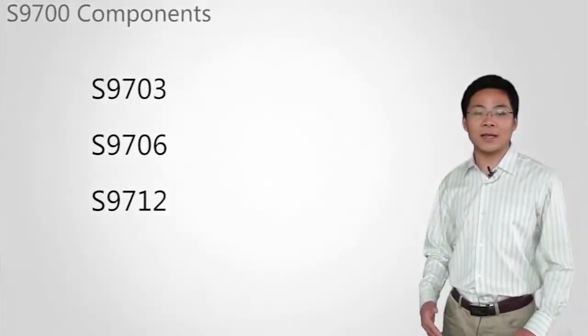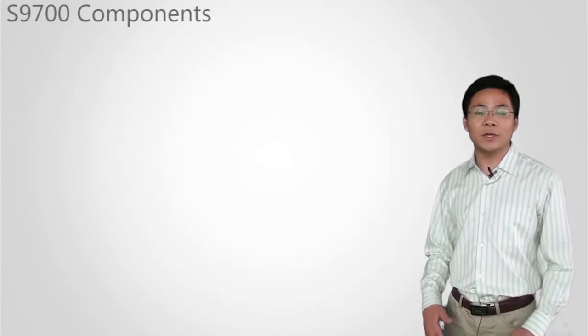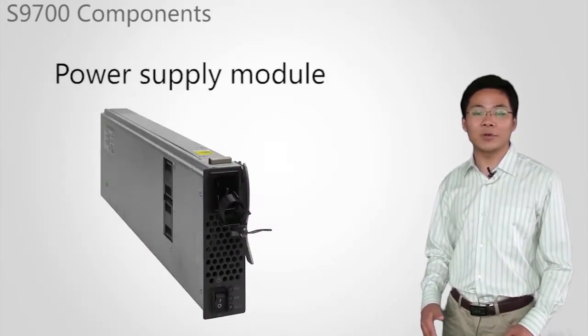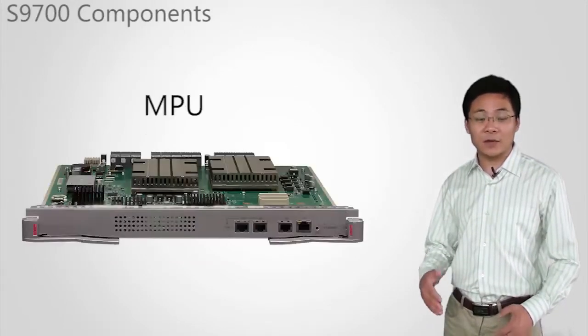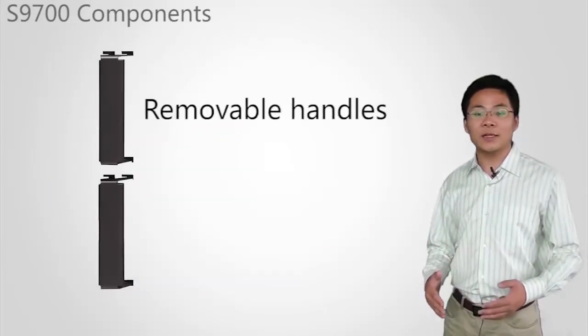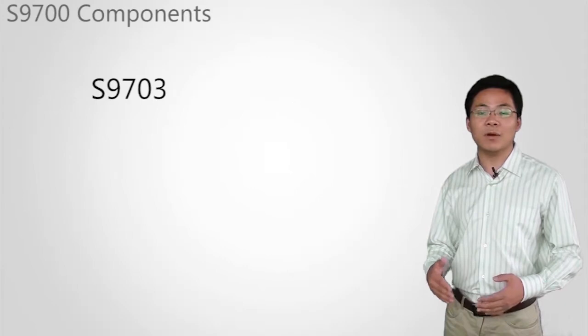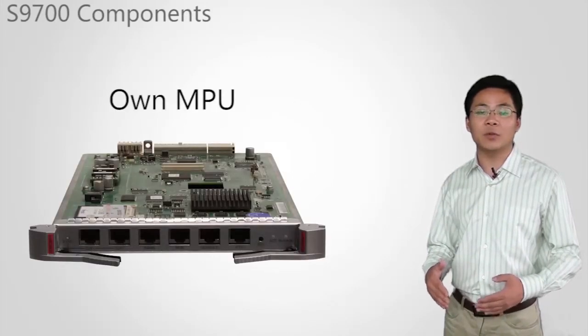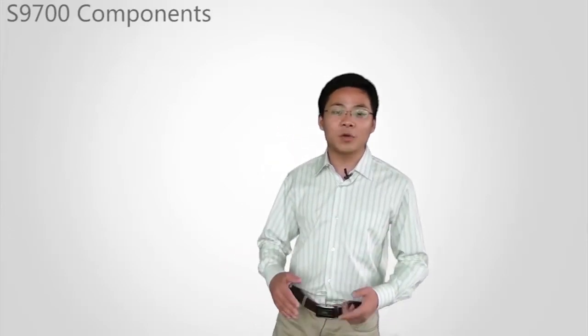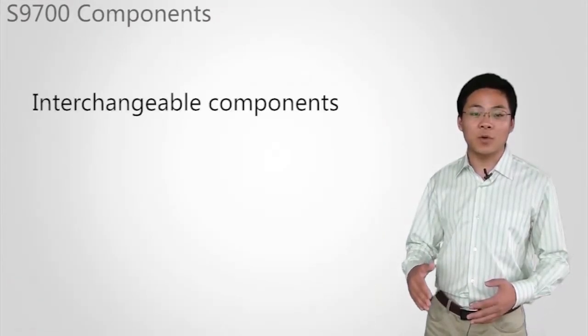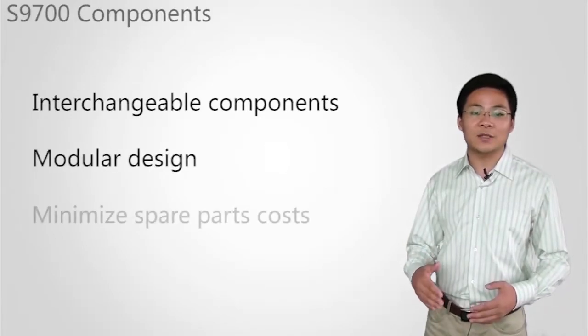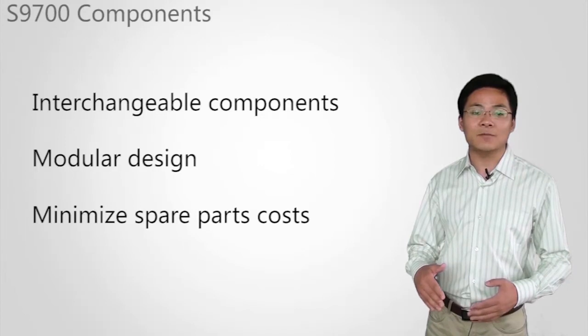S9703, S9706, and S9712 use the same kinds of LPU, power supply module, and fan frame. S9706 and S9712 use the same kinds of MPU, monitoring board, removable handles, and cable dividers. S9703 has its own MPU and no monitoring board. S9703, S9706, and S9712 have model-specific rack mounting ears and air filters. All three models use interchangeable components and a modular design to minimize spare parts costs. The modular design allows for device scalability without new custom investment.